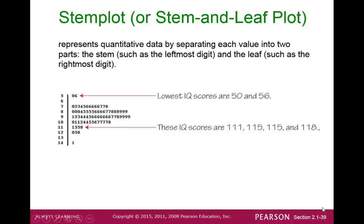A stem plot, or stem-and-leaf plot, is a plot where you represent each number with the last digit in the leaf part on the right side, and the other digits as the stem part on the left side. In this example, the first stem-and-leaf combination would represent two numbers: 50 and 60. The number 5 represents the tens position, and the numbers 0 and 6 represent the ones position.